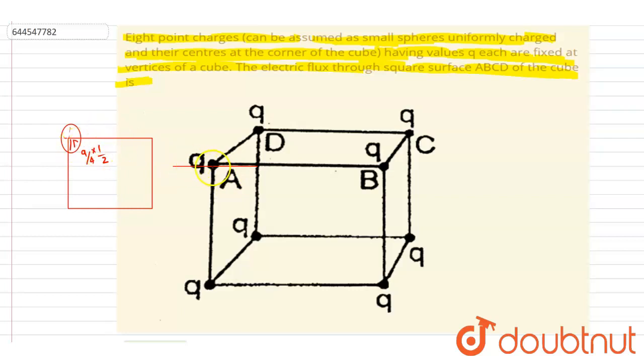So for each charge, only 1 by 8 part will be inside the cube, and 1 by 8 part you can imagine from this diagram, since we already cut it from this part and we took hemispherical charge.